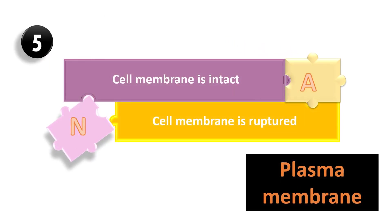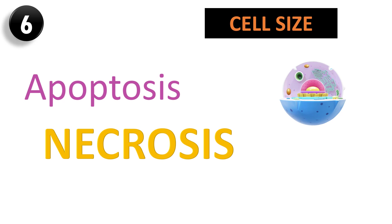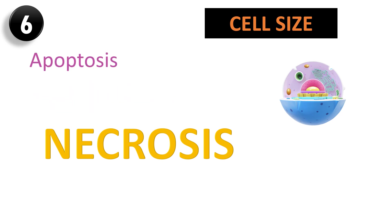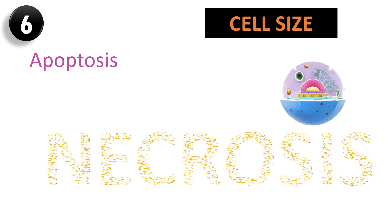The fifth and most important difference is that the plasma membrane is intact in apoptosis, while in necrosis the plasma membrane is ruptured. The sixth difference is that in apoptosis the cell shrinks, while in necrosis the cell swells and ruptures.